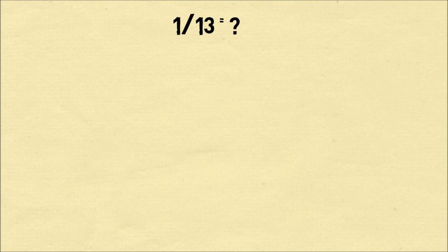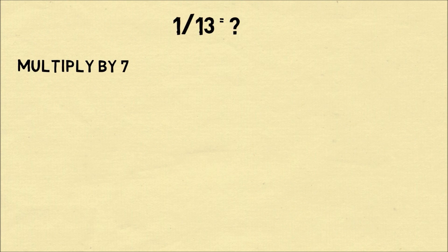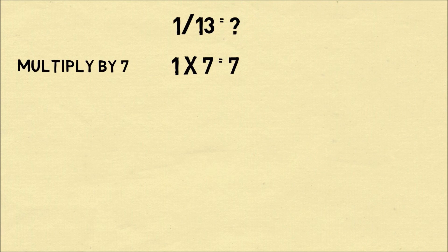So let's do another example. Let's try 1 divided by 13. We multiply the dividend 1 by 7 and this part's easy. 1 times 7 is equal to 7.